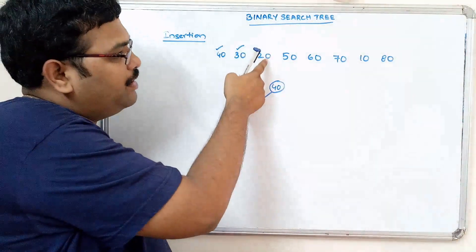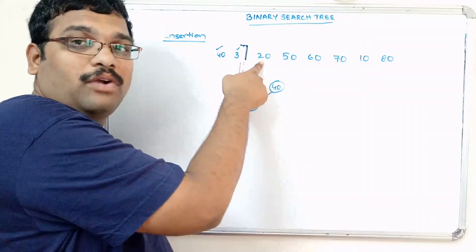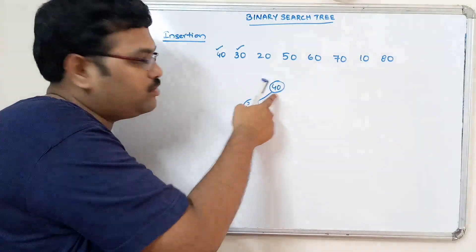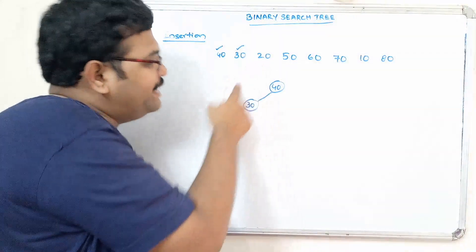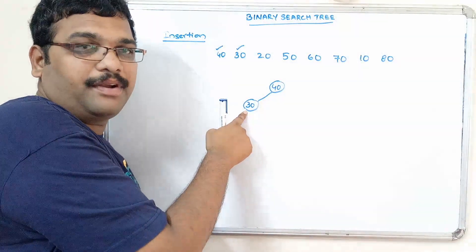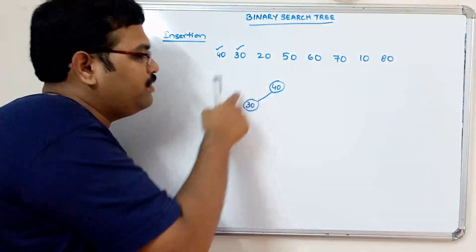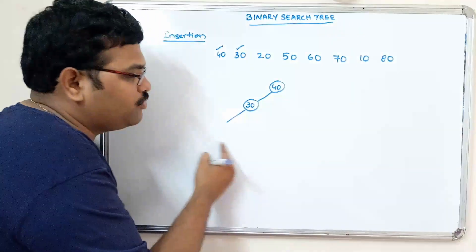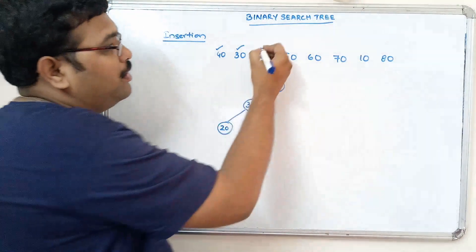Coming to 20 — the tree now has two nodes. 20 is compared with the root node 40. 20 is less than 40, so the position of 20 is on the left subtree. In the left subtree, 20 is compared with 30 because 30 is the root of the left subtree. 20 is less than 30, so we go with the left part. Since the left part is empty, we insert 20 there.